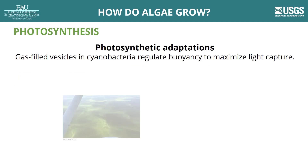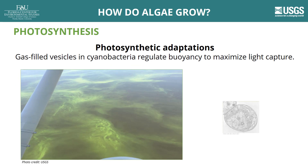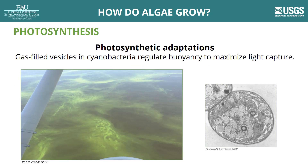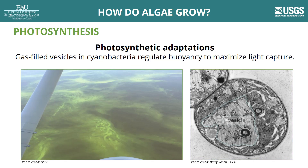Some algae have adaptations that help them float near the surface of the water so that they can capture more sunlight. For example, some cyanobacteria have gas-filled structures or pockets called vesicles that are used to regulate buoyancy. When gas builds up in these vesicles, the algae float to the surface of the water. Cyanobacteria move up and down in the water to maximize light and collect nutrients.